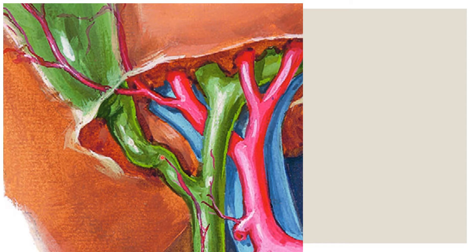So to summarize the boundaries: below and laterally we can identify the cystic duct, and medially we can identify the common hepatic duct. This triangular area is called Calot's Triangle.